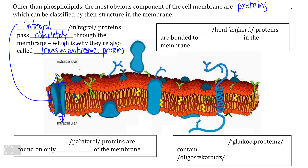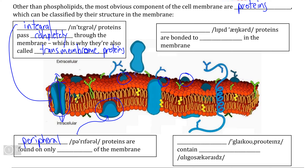If we look on the inside of the cell membrane, we can see an example of a protein that is only found on one side of the cell membrane, only pointing to the inside. We can also see examples of proteins that are only found on the outside. Regardless of which side they are found on, these are what we call peripheral membrane proteins, meaning that they're only found on one side of the cell membrane.